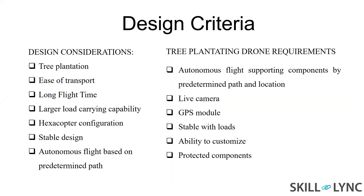I have considered many design criteria for the tree plantation purpose, along with common requirements for drones. On the left side I have added additional points that need to be considered to employ this drone as a tree planting application. These include a live camera, GPS module, and a stable design — because we don't require high speed but rather a more stable design, since it has to carry more load and work through a predetermined path.